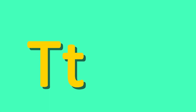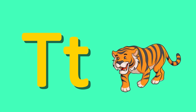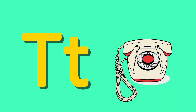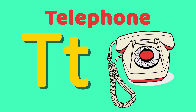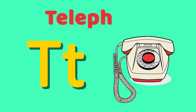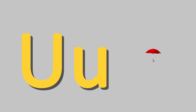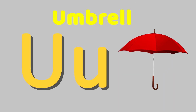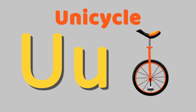T for tiger. T for telephone. U for umbrella. U for unicycle.